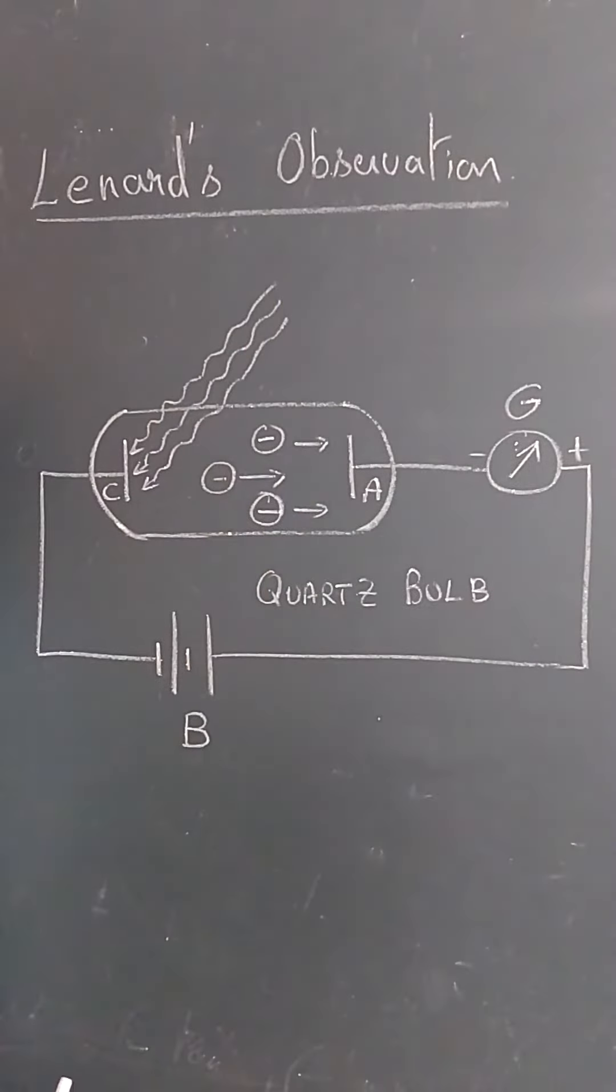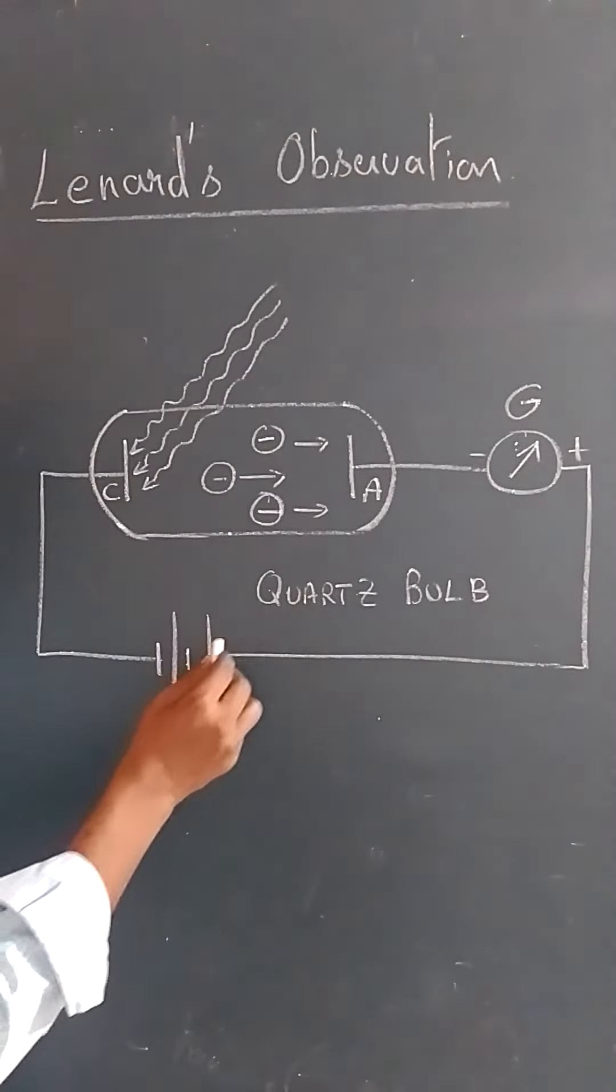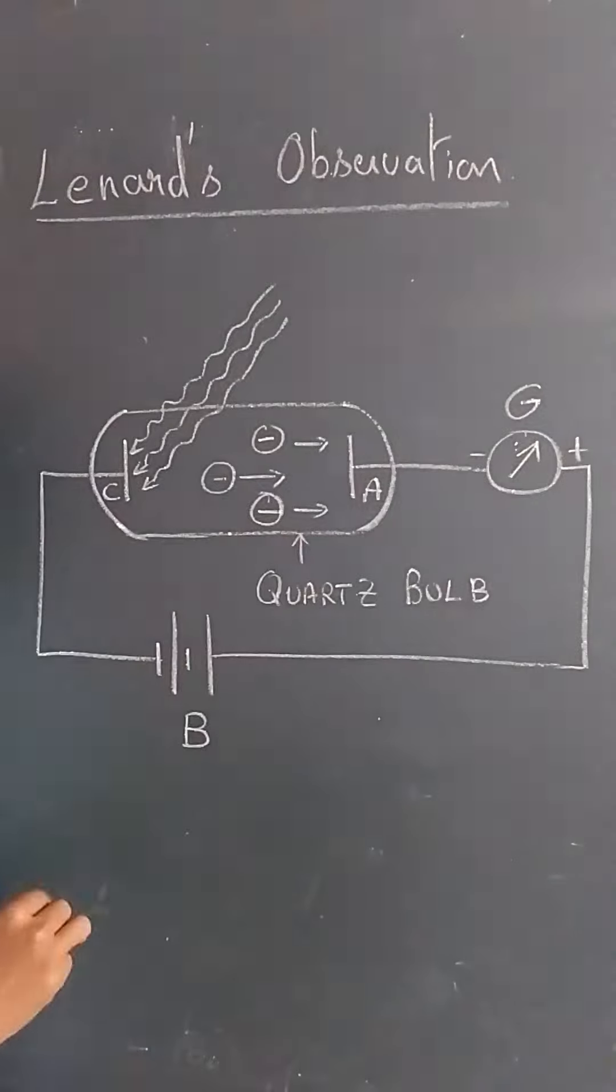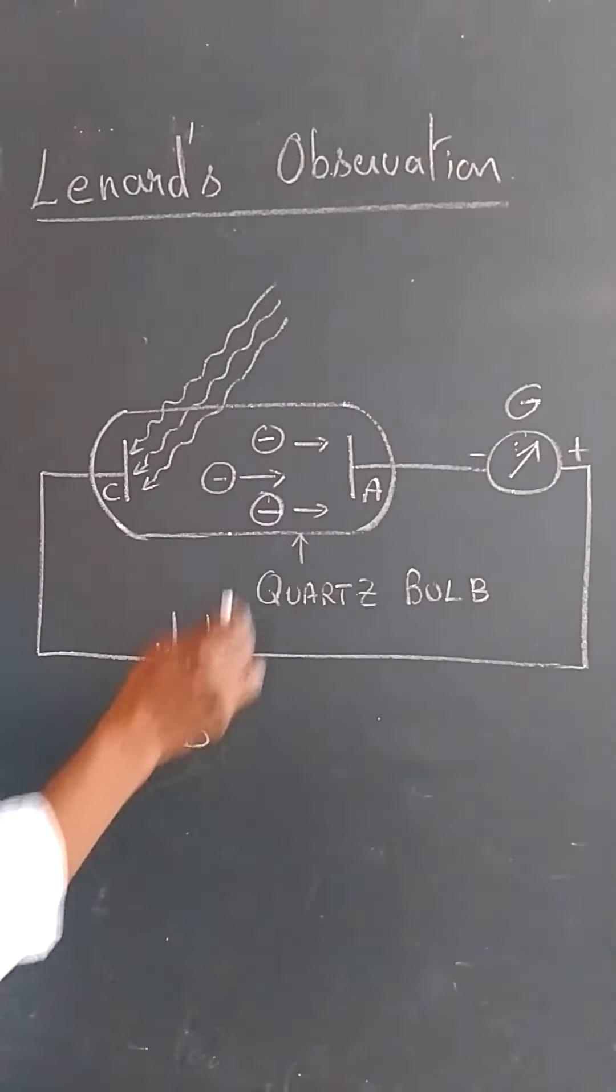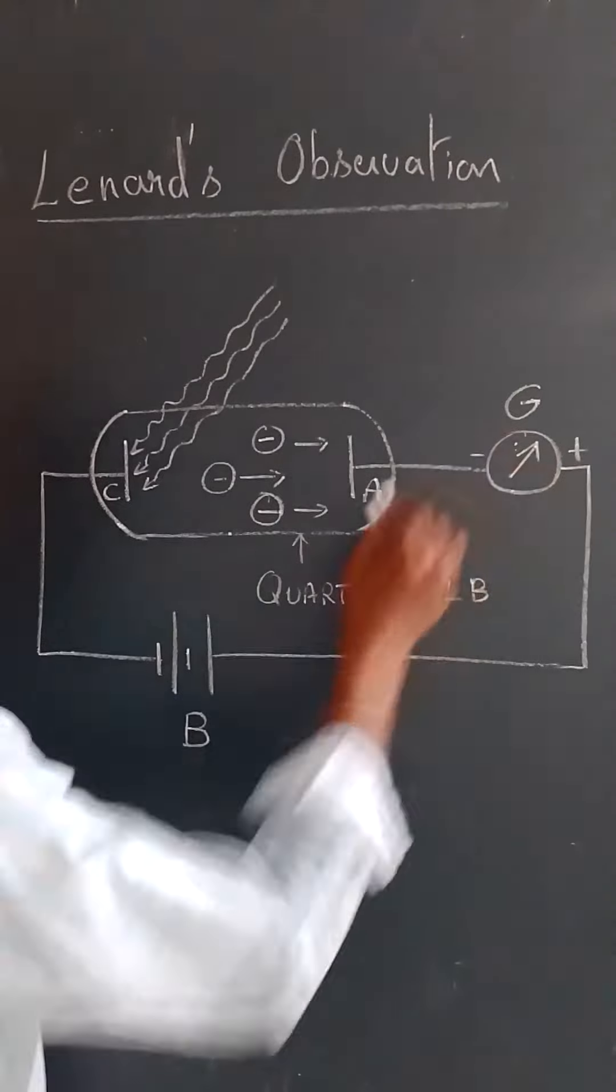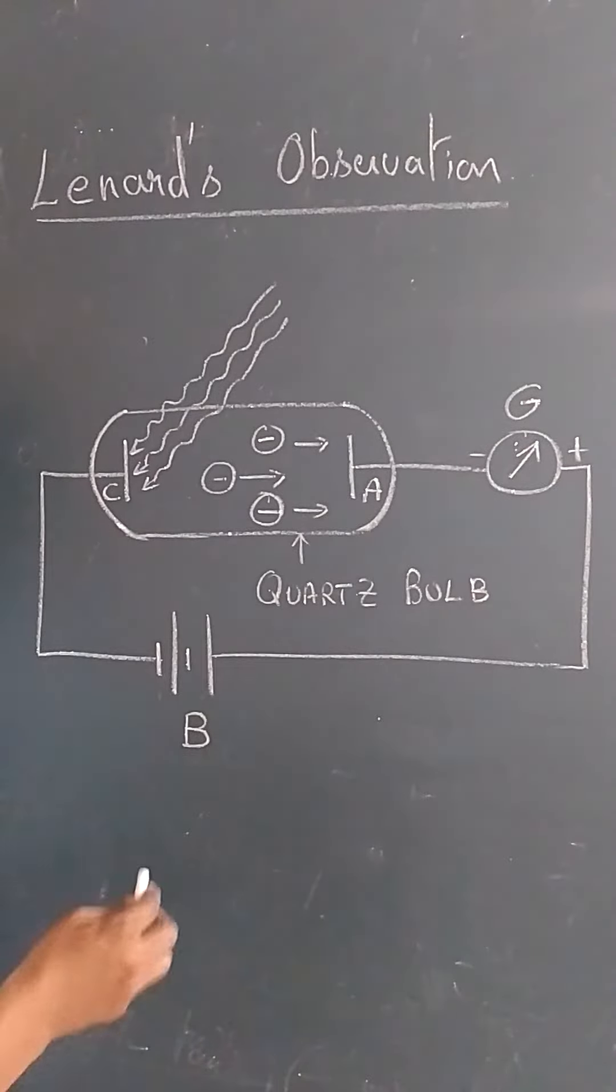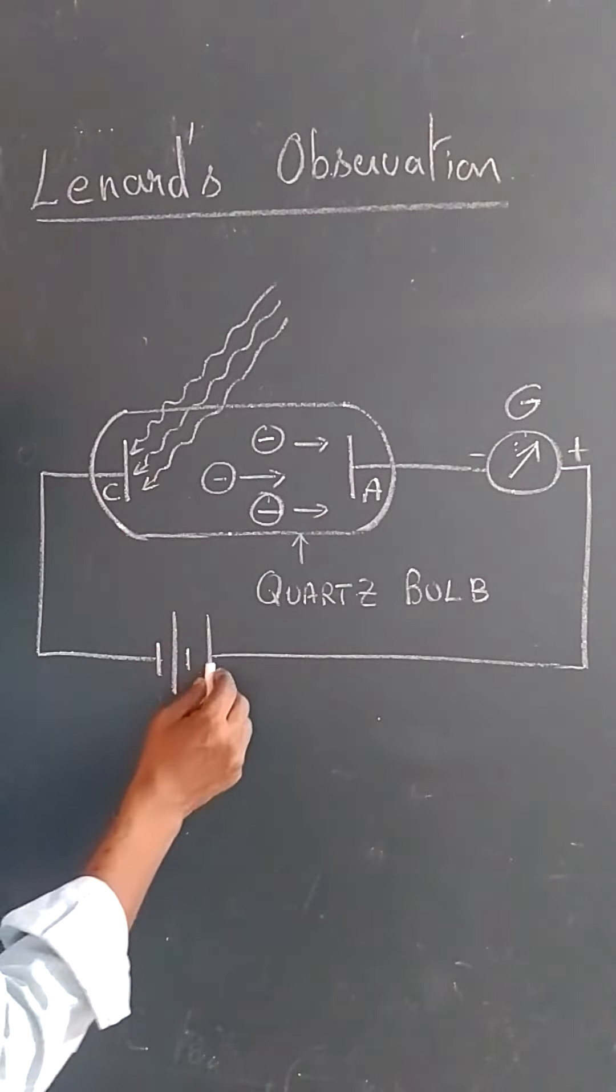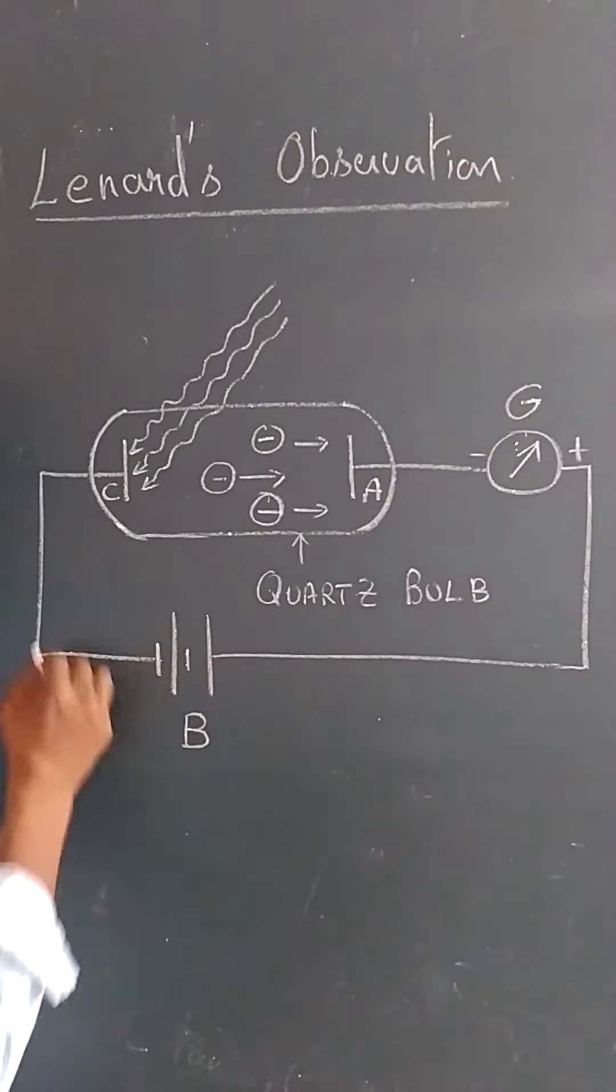Lenard's observation: You have an evacuated quartz bulb with two metallic plates, one is the anode and the other is the cathode. From the anode you connect a galvanometer, and here is the battery supply. The positive goes to the anode and negative goes to the cathode.